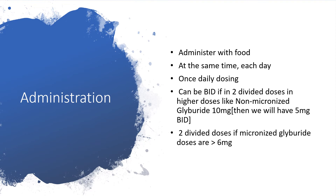Regarding administration: you can give this medication with food at the same time each day. Once daily dosing is very common, but it can be twice daily — divided into two doses — if dealing with higher doses. For non-micronized Glyburide up to 10 mg, give it as 5 mg twice daily. For micronized Glyburide, anything greater than 6 mg should be given two times daily.